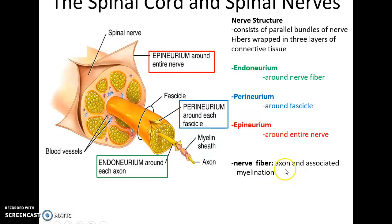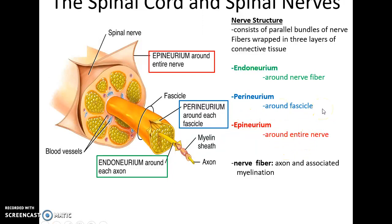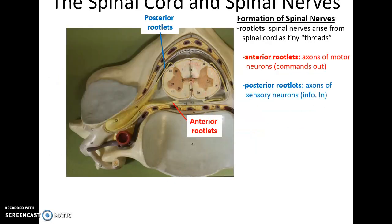So in summary: the nerve fiber is an axon with associated myelination if it is myelinated. The endoneurium is connective tissue around the nerve fiber. The perineurium is connective tissue around the fascicles. The epineurium is connective tissue around the entire nerve. This structure should look familiar to what we saw in the muscular system.